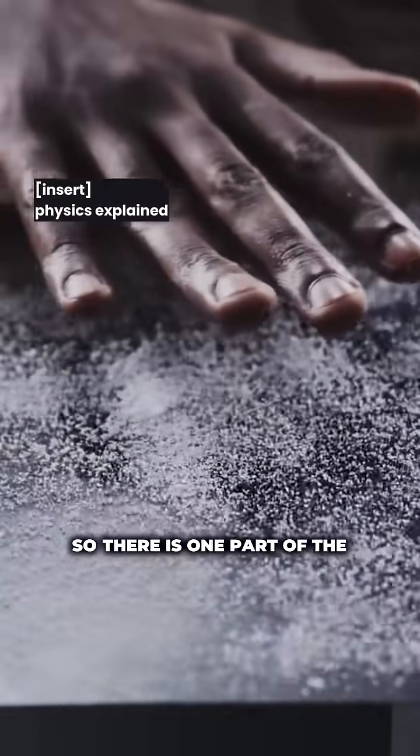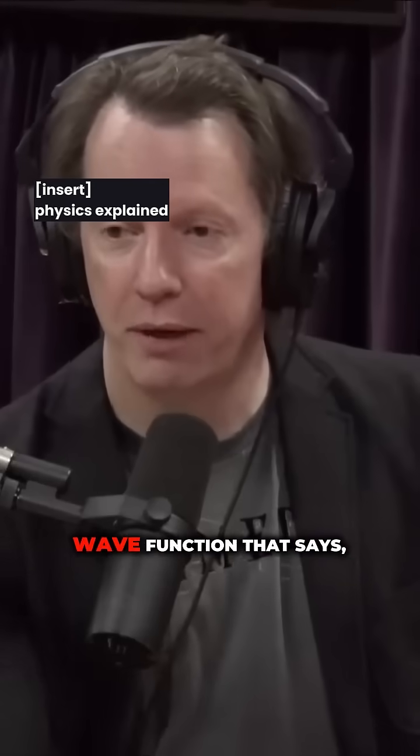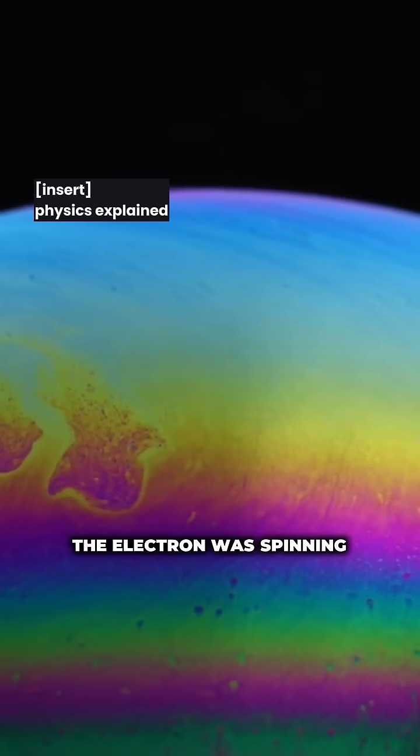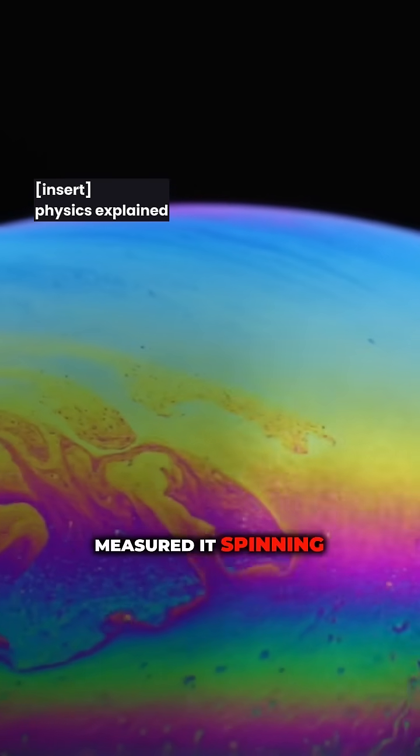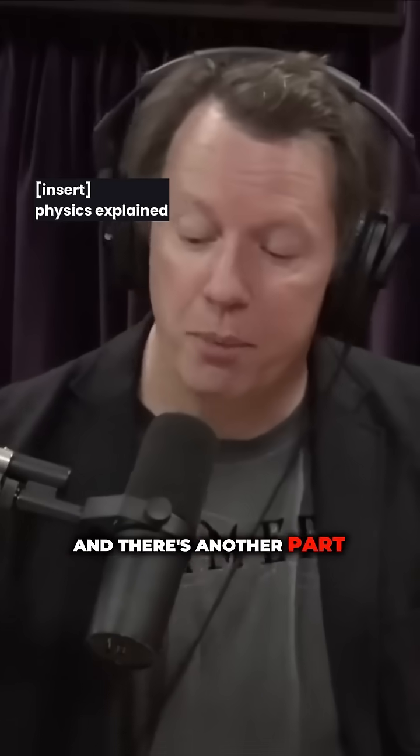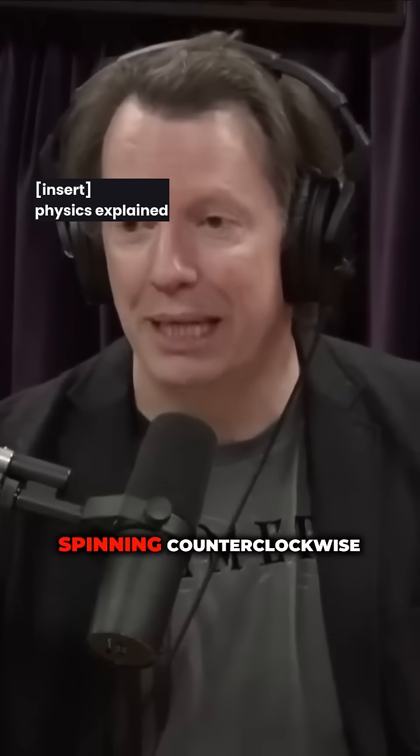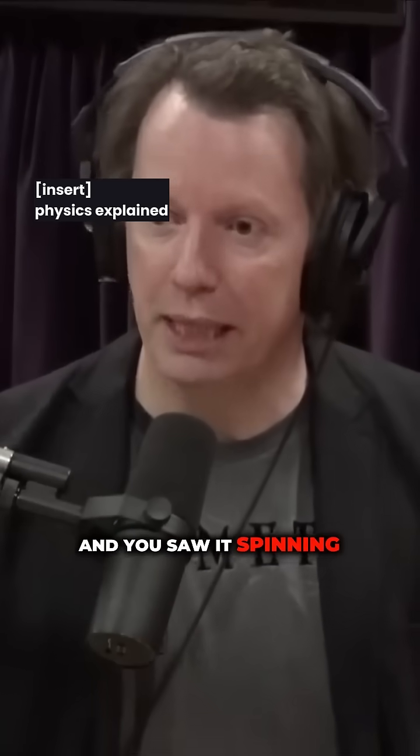So there is one part of the wave function that says the electron was spinning clockwise and you measured it spinning clockwise. And there's another part of the wave function that says the electron was spinning counterclockwise and you saw it spinning counterclockwise.